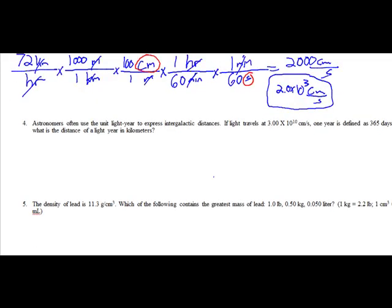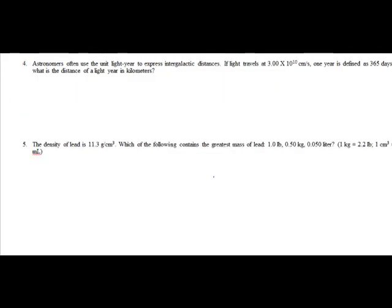All right, next example, number four. Astronomers often use the unit light year to express intergalactic distance. If light travels at 3.00 times 10 to the 10th centimeters per second, one year is 365 days, what is the distance of a light year in kilometers?